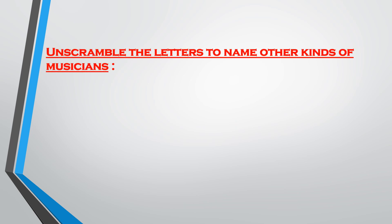The first exercise: unscramble the letters to name other kinds of musicians. In this exercise, the names of musicians are given and you have to rearrange the letters to get the correct name. The first word is R-I-S-T-G-U-I-A-T. When you rearrange the letters, you will get the name of a musician: G-U-I-T-A-R-I-S-T, that is guitarist. So a person who plays a guitar is known as a guitarist.